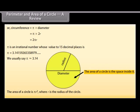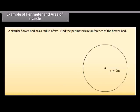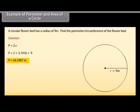We usually say pi is approximately equal to 3.14. The area of a circle is pi r squared, where r is the radius. Example 1: A circular flower bed has a radius of 9 meters. Find the perimeter or circumference of the flower bed. We know that perimeter P equals 2πr. Substituting the values, P equals 2 × 3.1416 × 9, which equals 56.5487 meters.